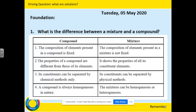For compounds versus mixtures — point one: the composition of elements present in a compound is fixed. Remember that a compound is a mixture of two or more elements that are chemically bonded together, so they are in a fixed pattern or structure. For a mixture, the composition of the elements present is not fixed — remember, two or more substances that are not chemically bonded to each other.